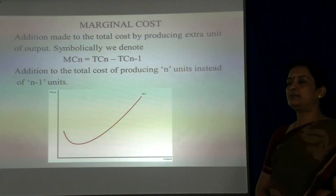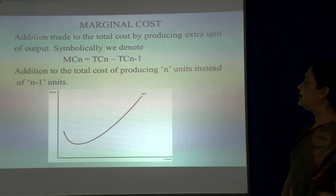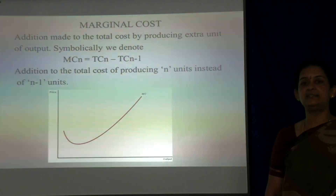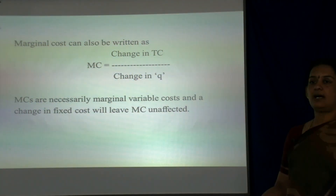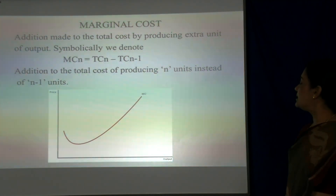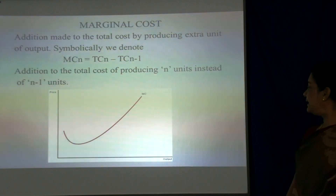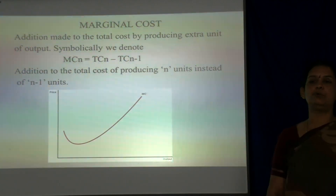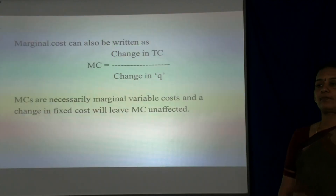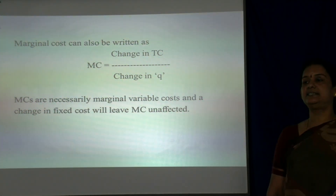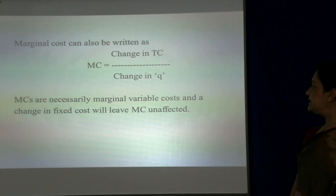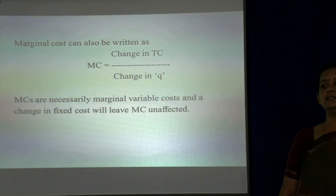Next is marginal cost. Marginal cost is the addition made to the total cost by producing an extra unit of output. It is symbolically denoted as: MC of n = TC of n minus TC of (n−1), that is the addition to the total cost of producing n units instead of n−1 units. In the diagram, the X-axis represents the output and the Y-axis represents the price, and the shape of the marginal cost curve is U-shaped. Marginal cost can also be written as change in total cost divided by change in output. Marginal cost are necessarily marginal variable cost, and a change in fixed cost will leave marginal cost unaffected.